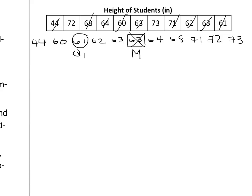On the right side is the upper half of the data. The median of the upper half is 71. We call this Q3. Technically the median is considered Q2, but we don't refer to the median as that.